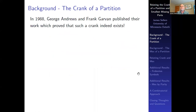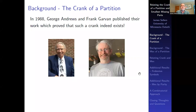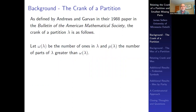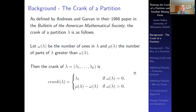44 years later, George Andrews and Frank Garvin published work proving that such a crank statistic does exist. In 1988, in the Bulletin of the AMS, they defined the crank as follows: let ω(λ) be the number of ones in partition λ, and μ(λ) be the number of parts of λ greater than ω(λ). The crank equals the largest part if there are no ones, and equals μ(λ) minus ω(λ) if there is at least one 1.